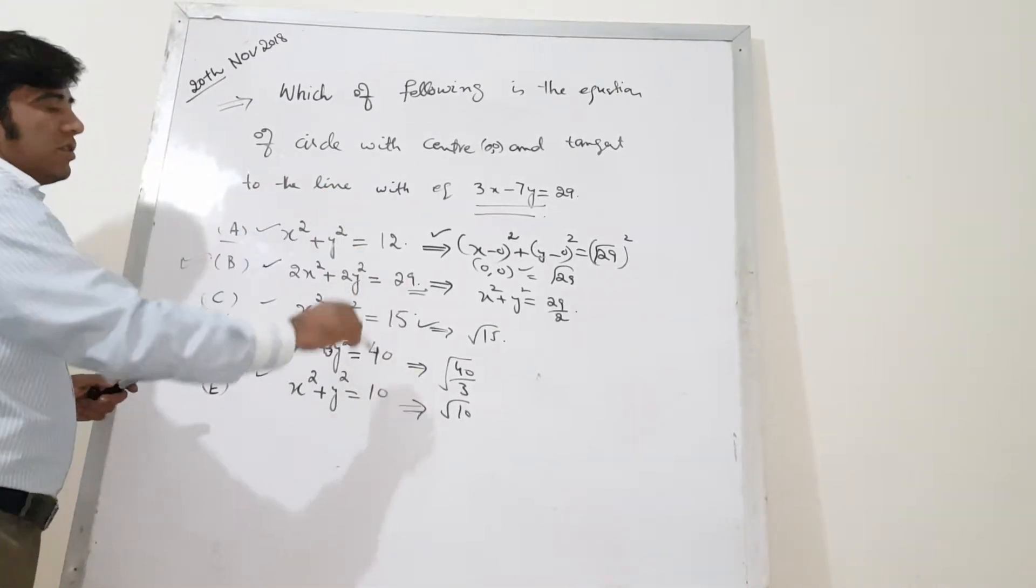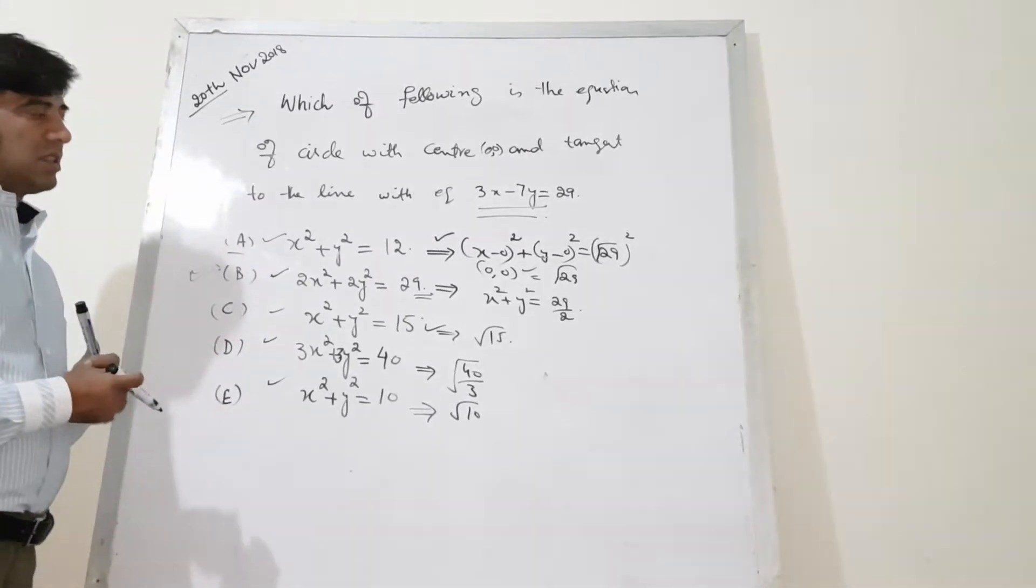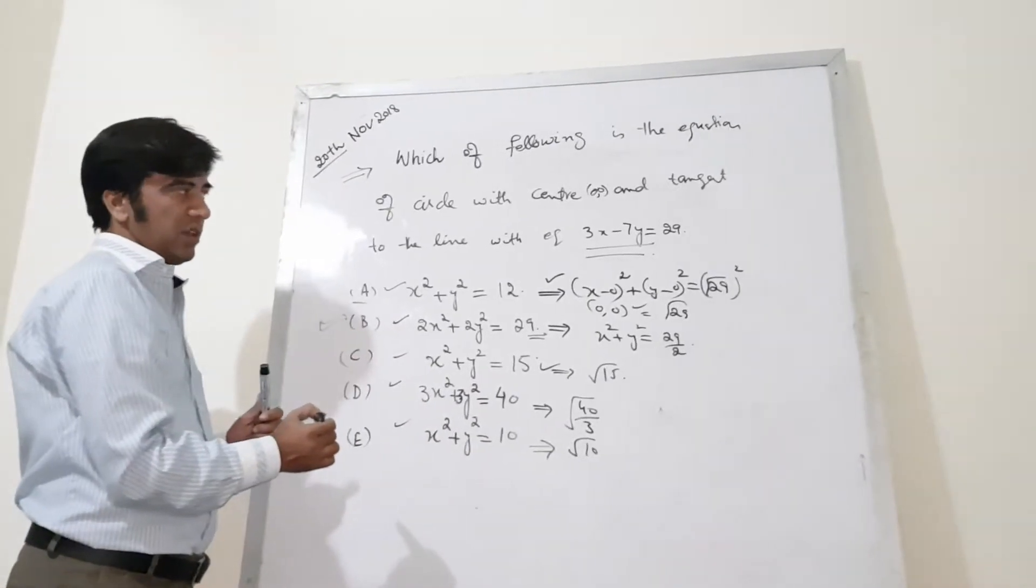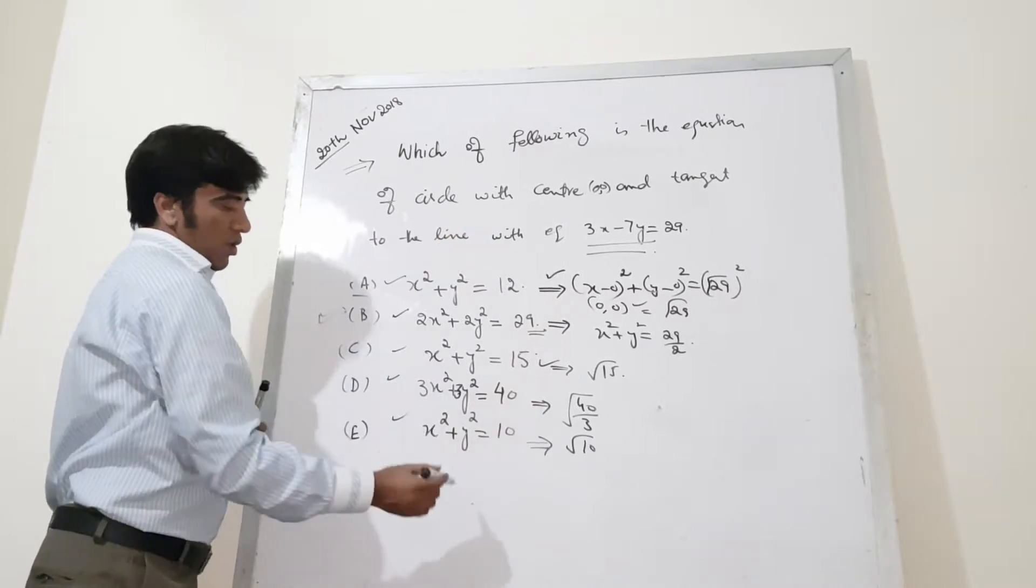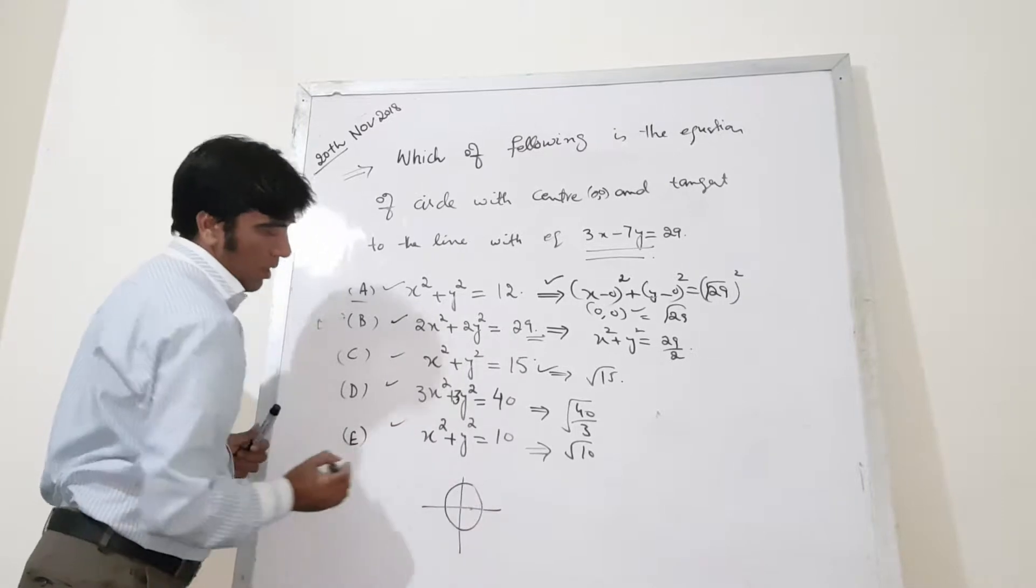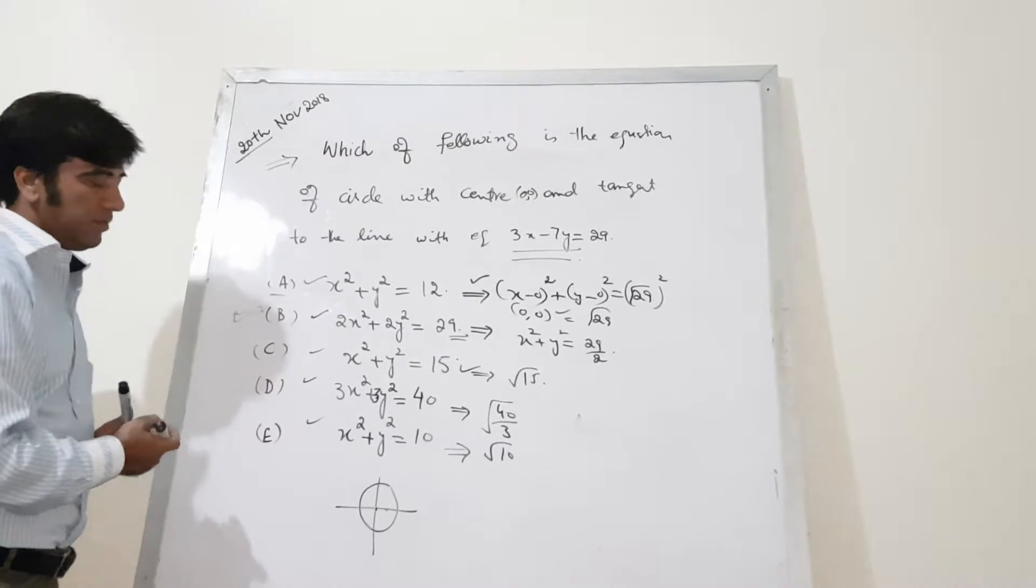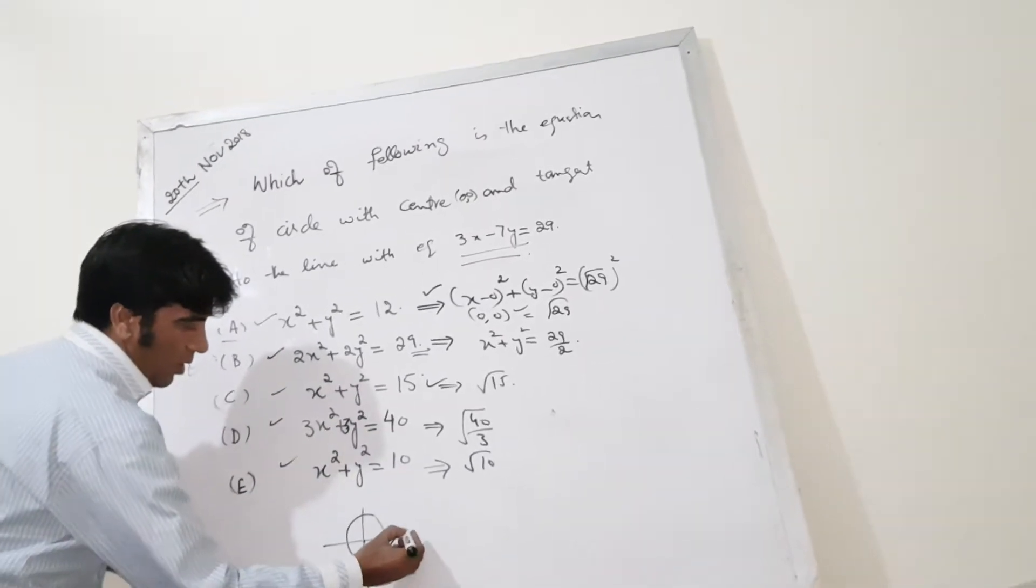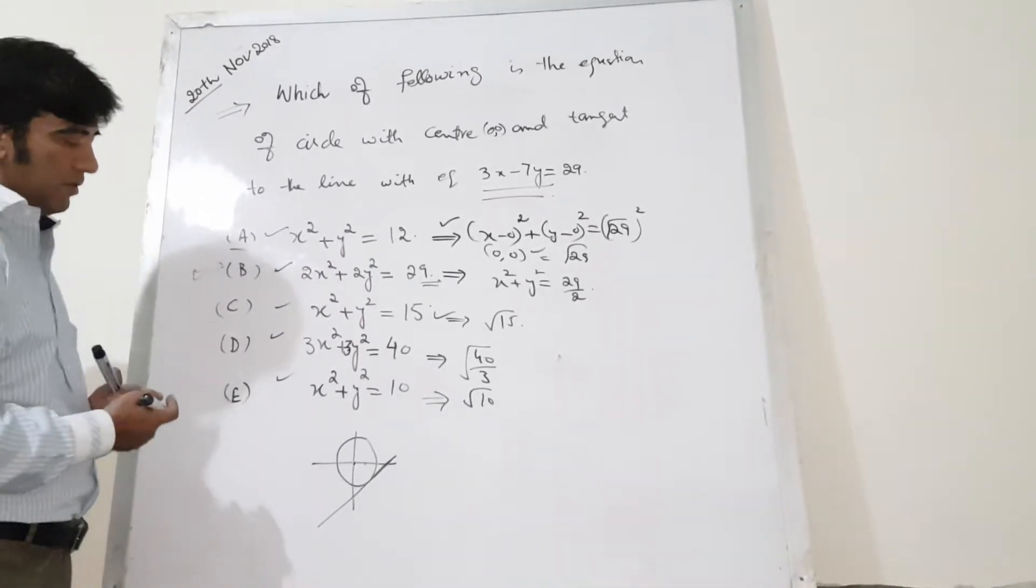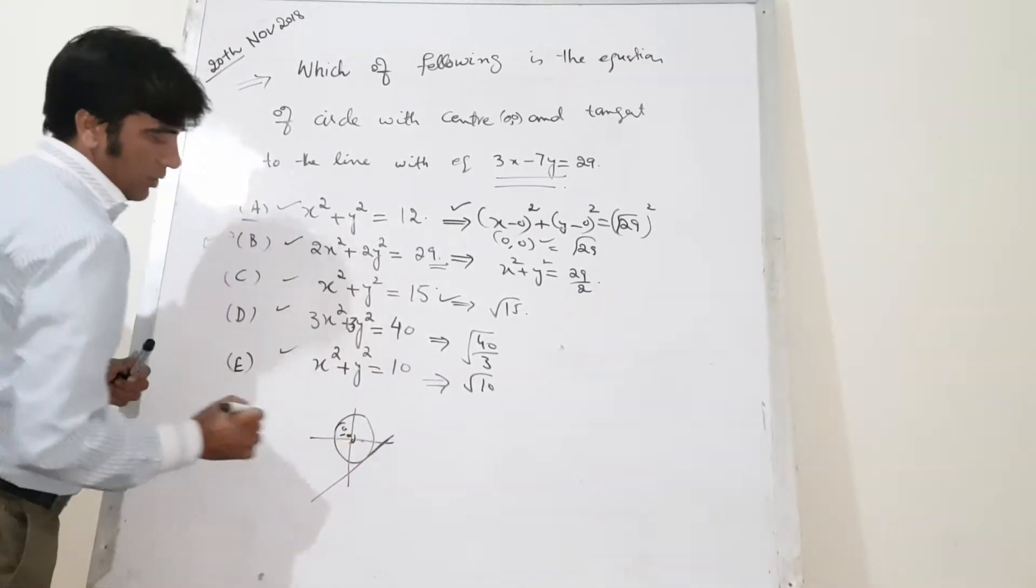Now all these equations are very close to each other and this is very difficult from these options to pinpoint the correct option. So how do you crack it? First you just draw the circle and then just draw a line which is tangent to the circle with center over there.